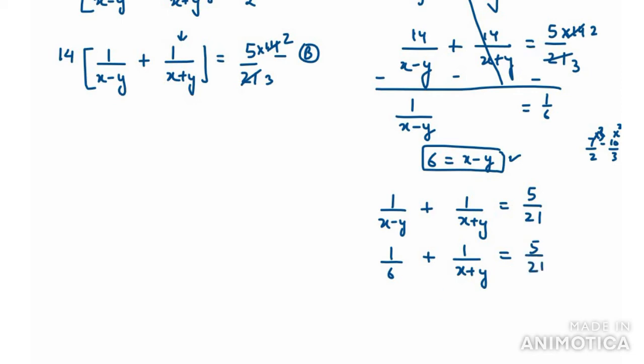Move 1 over 6 to the right hand side: 5 over 21 minus 1 over 6. Taking LCM of 21 and 6, you get 42. Multiply the first term by 2 to get 10, and multiply 1 by 7 to get 7. So 10 minus 7 equals 3 over 42, which reduces to 1 over 14. So 1 over x plus y equals 1 over 14. By cross multiplication, x plus y equals 14.